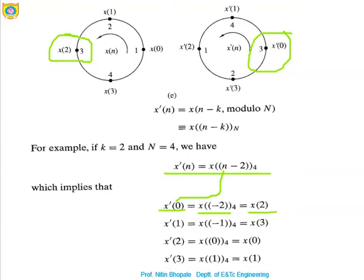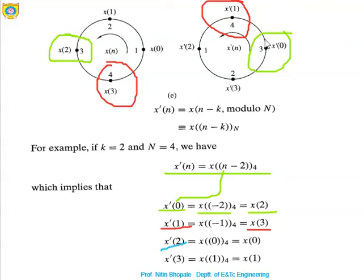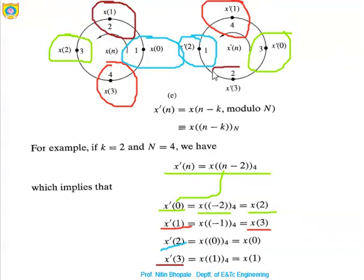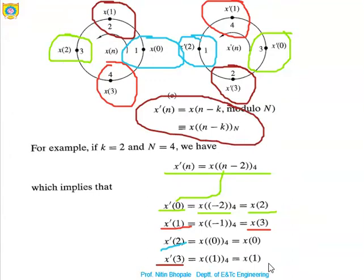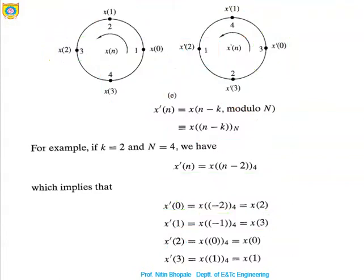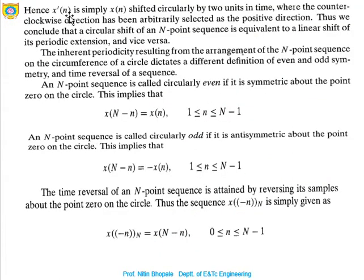Similarly, x'(1) = 4, which is the same as x(3). x'(2) = 1, which is the same as x(0). x'(3) = 2, which is the same as x(1). This is how all values are verified with respect to the expression x'(n) = x((n-k) mod N). This is the simple circular shifting property.